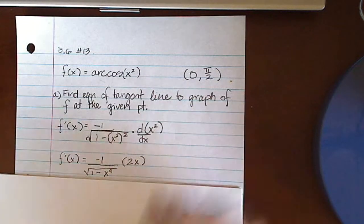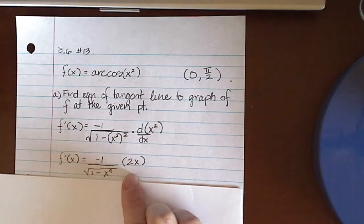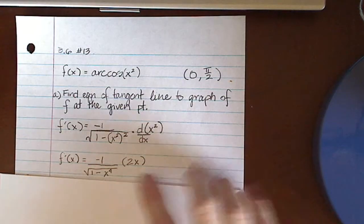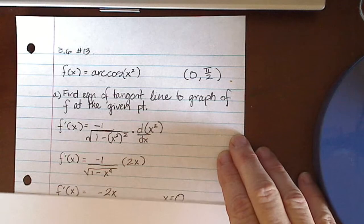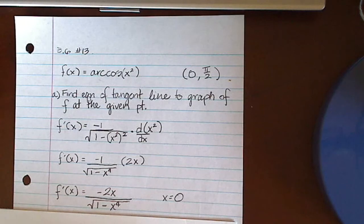So then I end up with the derivative of my given function is minus 1 over the square root of 1 minus x to the fourth, all that multiplied by 2x, my derivative of the x squared. So then I see that I can simplify that, and I end up with negative 2x over the square root of 1 minus x to the fourth.